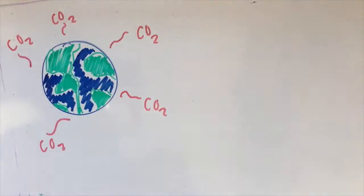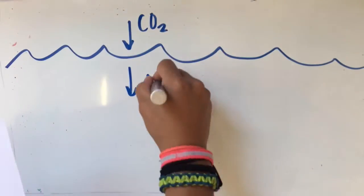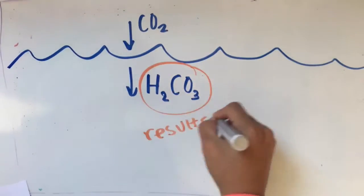When carbon dioxide is released into the atmosphere, about a fourth of it gets absorbed by the ocean. When CO2 enters the ocean, it forms carbonic acid, H2CO3.